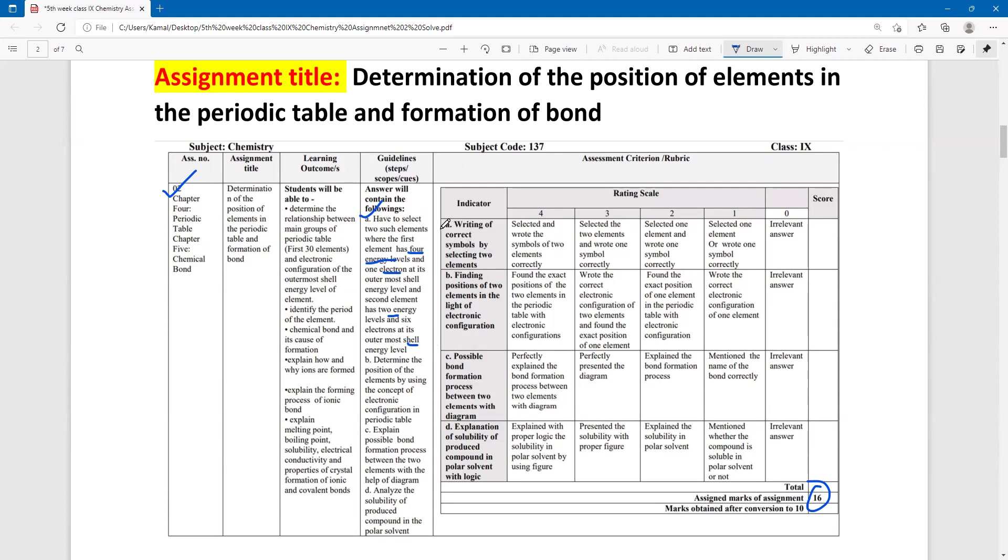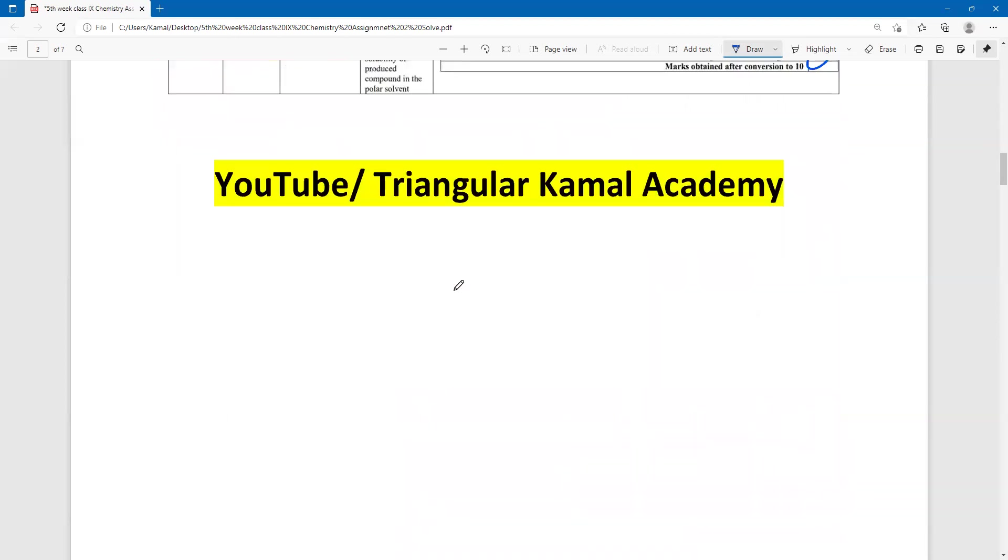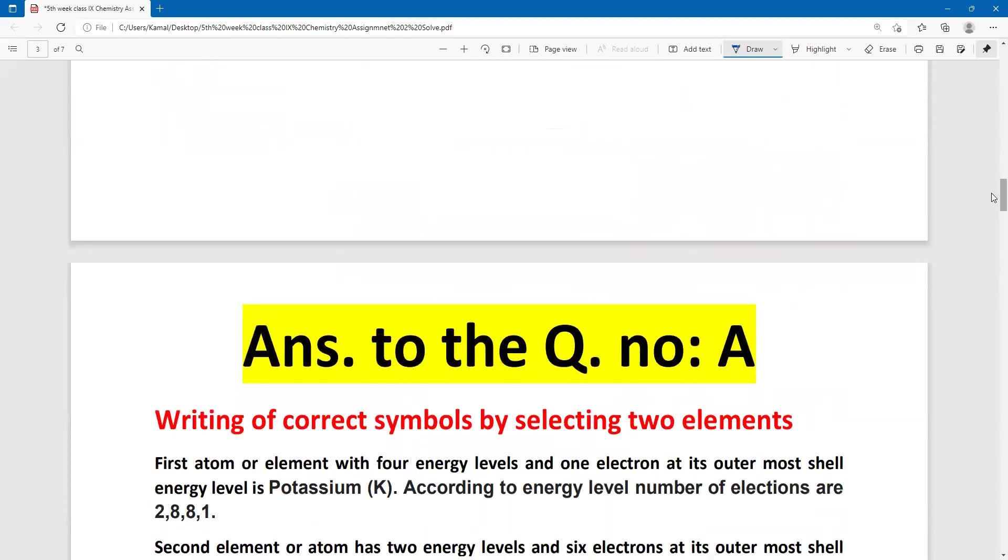Basically, first identification of the atom, then electron configuration, and then position, and electron position or possible bond formation process between two elements with the diagram, and then explanation of solubility of produced compound in the polar solvent with the logic. So, this is the first question to answer.